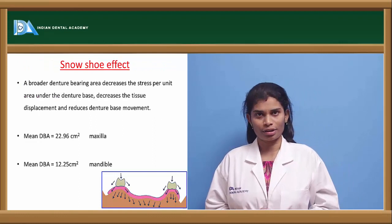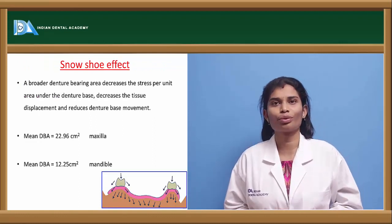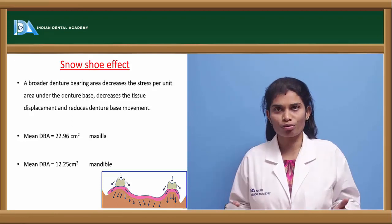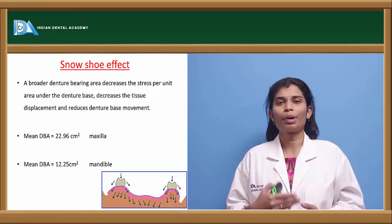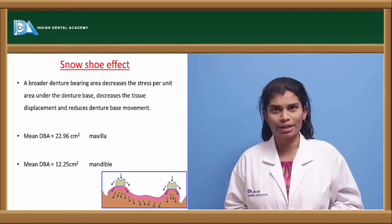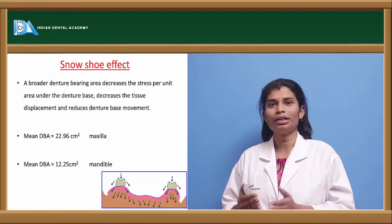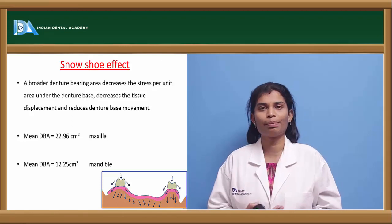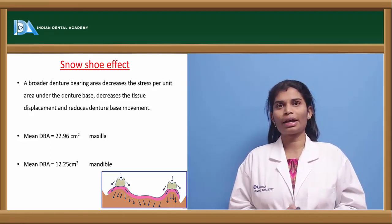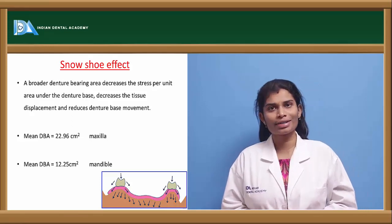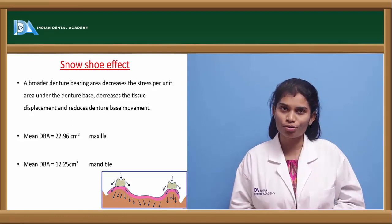Coming to the snowshoe effect: a broader denture bearing area decreases the stress per unit area. More area of coverage reduces the force per unit area, which in turn prevents slippage of the denture base and compressibility of the denture tissues, thereby protecting the tissues under the denture base and maintaining denture base health. The mean denture bearing area of the maxillary arch is 22.96 square centimeters, whereas in the mandibular arch it is 12.25 square centimeters.